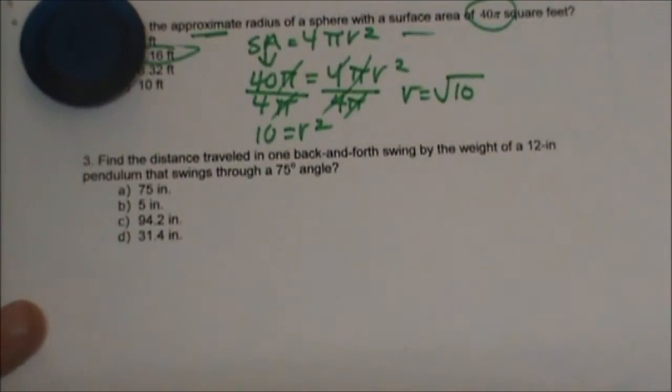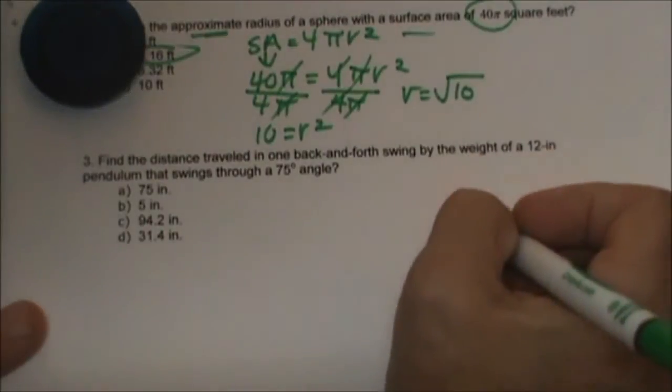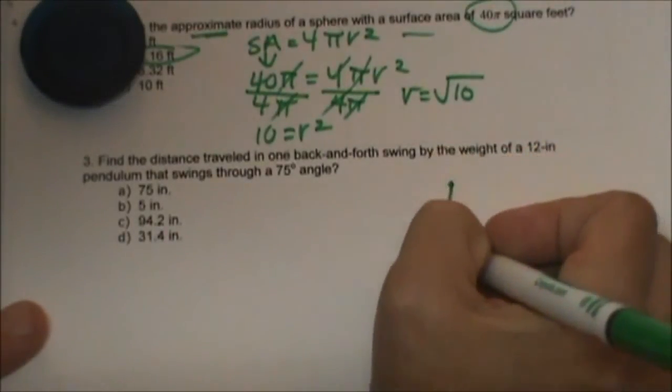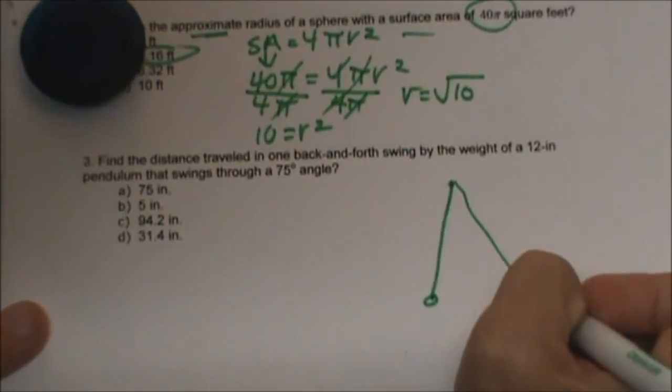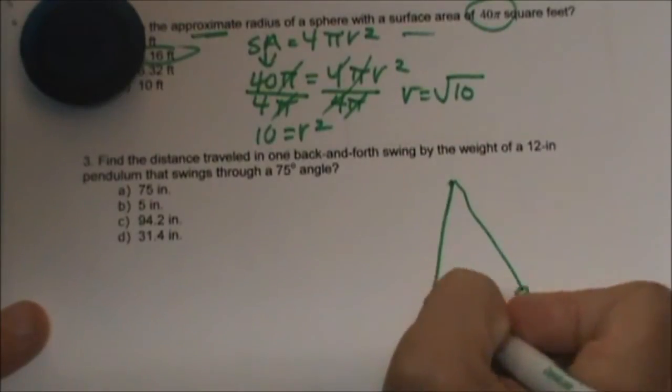This is no longer a sphere problem, this is now a review problem. So let's try to draw what we have. We have a pendulum and the balls go back and forth.